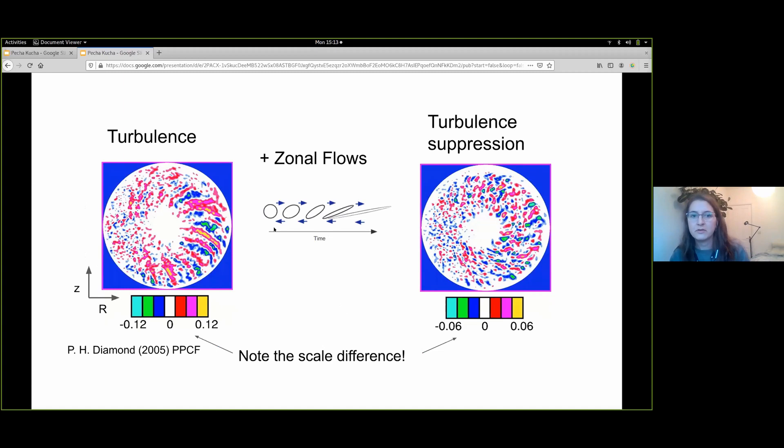In the build-up to the transition, the turbulence is found in a predator-prey relationship with radially sheared E cross B flows called zonal flows, until the threshold is passed and turbulence is suppressed in H-mode. Before the transition, energy is transferred from turbulence into zonal flows, and this non-linear energy transfer is an important measure for understanding the transition.